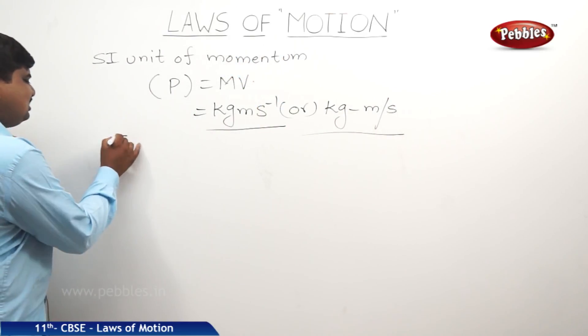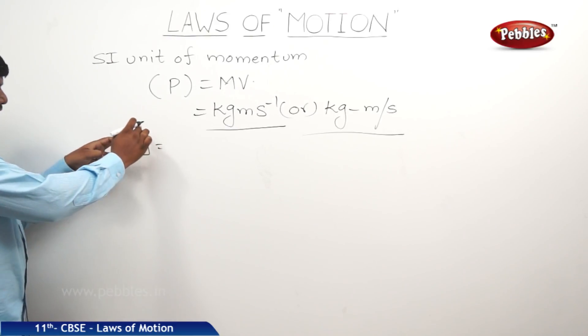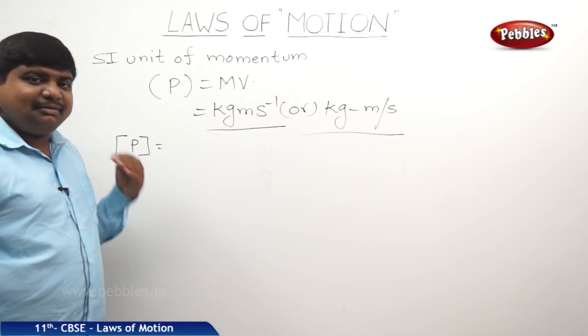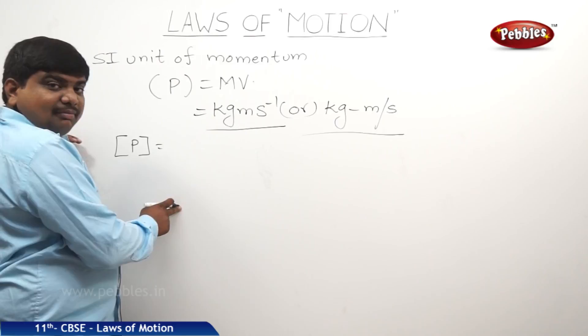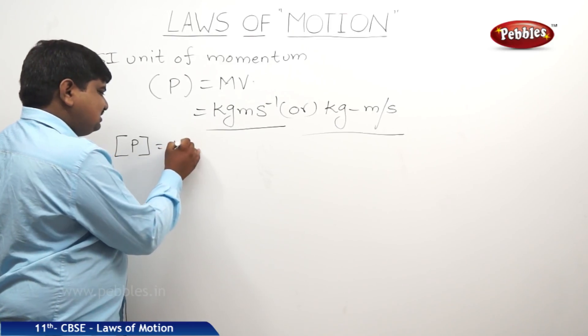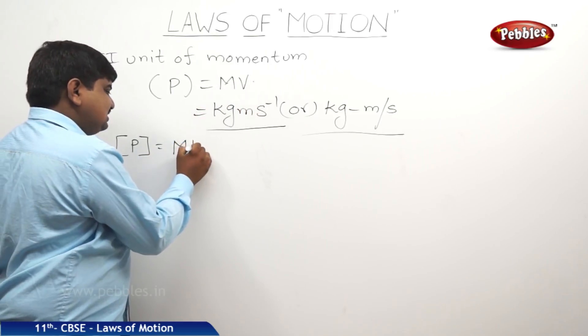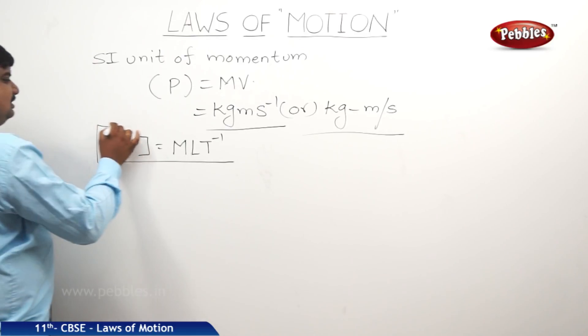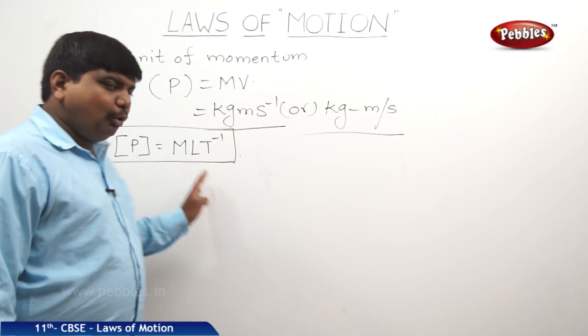So what about the dimensional formula of momentum? If you are keeping a physical quantity in this type of brackets, now we are writing the dimensional formula, that is the meaning. So the dimensional formula of the mass is M. Then the dimensional formula of the velocity is LT to the power minus 1. This is the dimensional formula of momentum of a body.